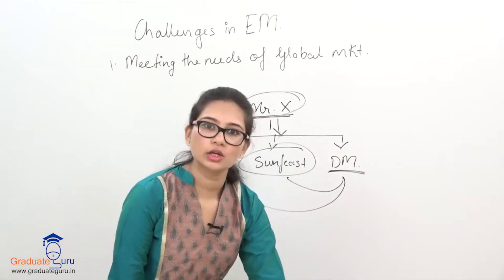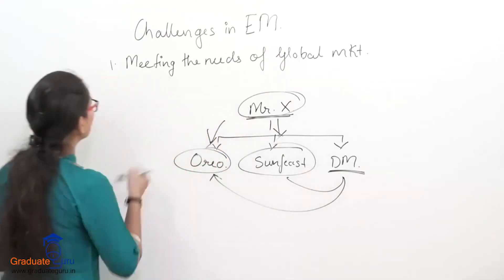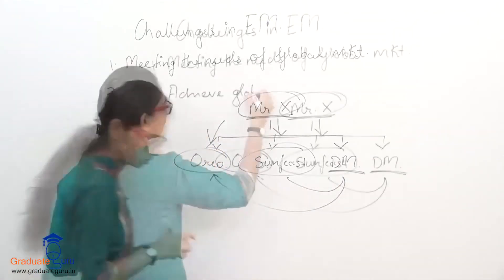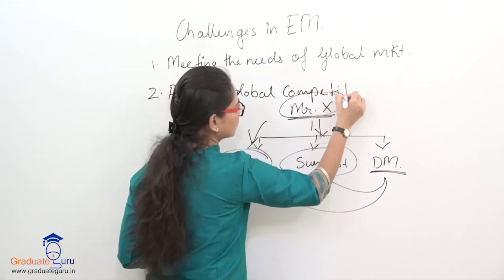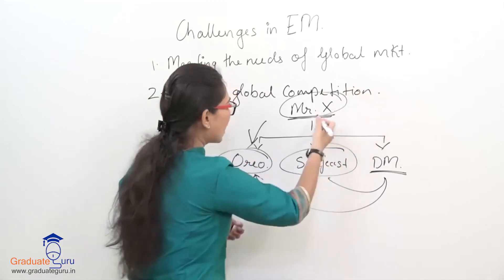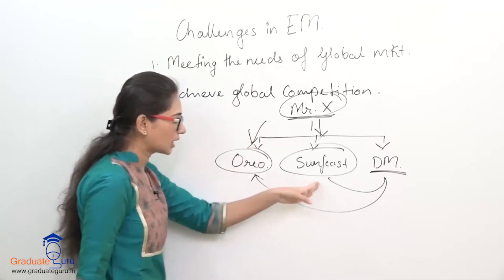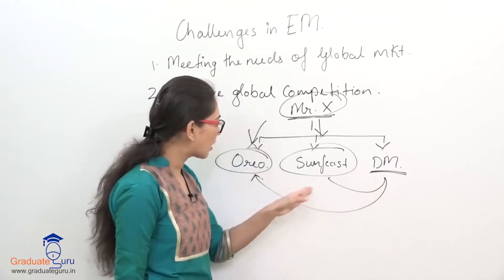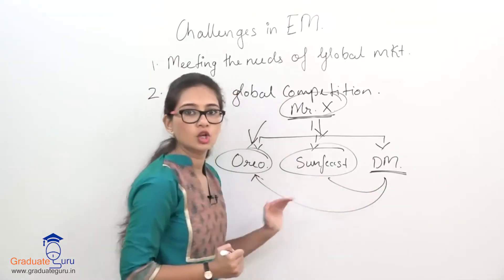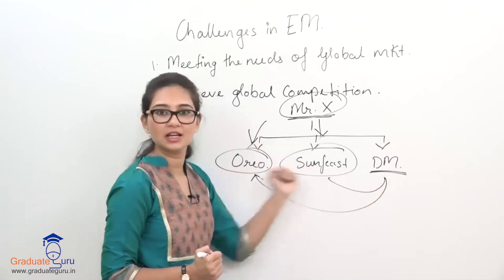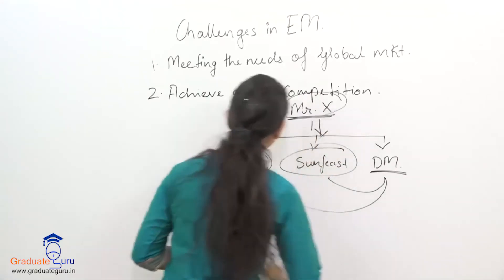The second challenge is achieving global competition. The consumer is aware of multiple biscuits available — Oreo, Sunfeast, and my product DM — making comparison very easy. So I have to meet my global competitors' standards. That is what achieving global competition means.